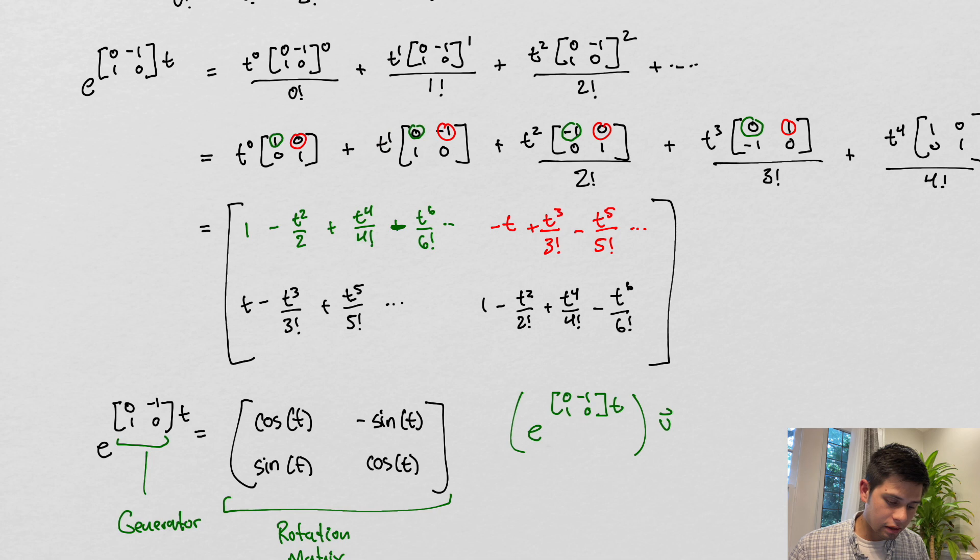And then t to the first power is just t times zero, well that's going to just be zero, so we could skip that first power. t to the second power, right here's that t to the second power times negative one, this is where we get that negative, right? And then over two factorial, two factorial which is just two.